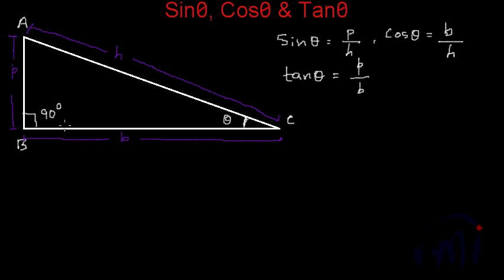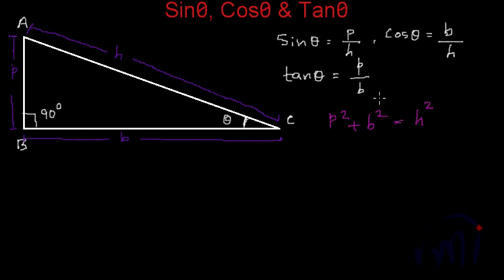And we also know in a right angle triangle, perpendicular squared plus base squared is equal to hypotenuse squared. This is the Pythagorean theorem, which says the sum of the squares of the sides which make 90 degrees is equal to the square of the third side, which is called hypotenuse. Now if I divide this equation by hypotenuse squared, what do we get?